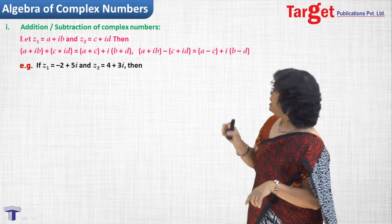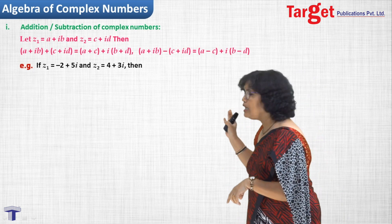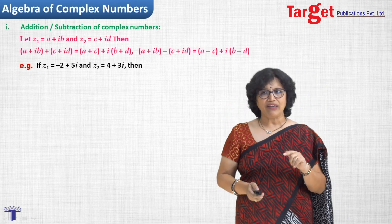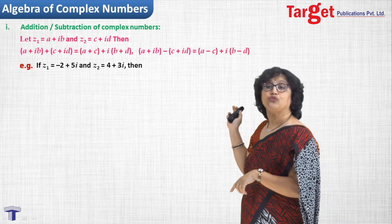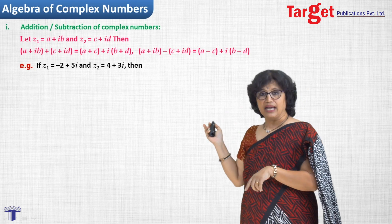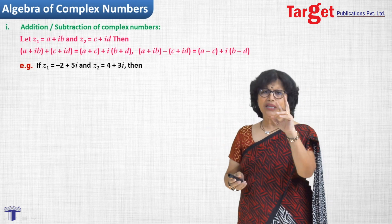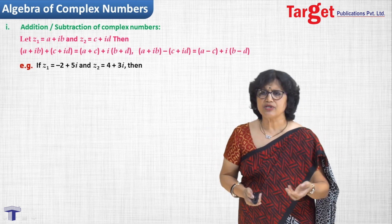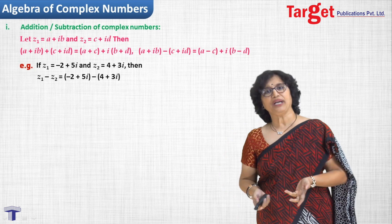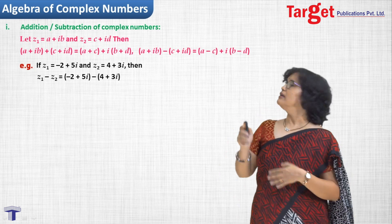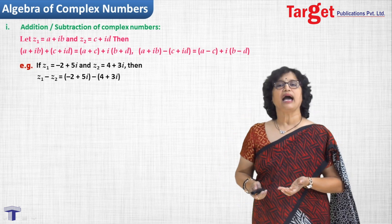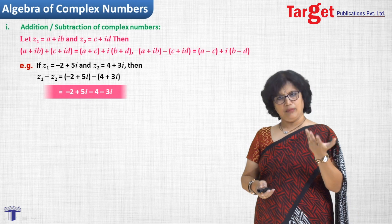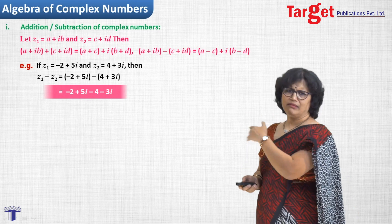Let us take one example. If z1 equals minus 2 plus 5i and z2 equals 4 plus 3i, for subtraction we subtract the real parts and subtract the imaginary parts and simplify further.